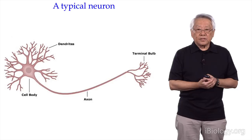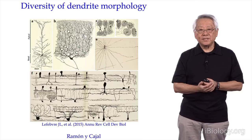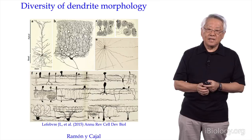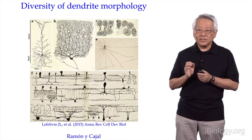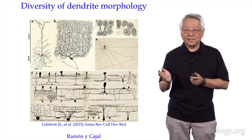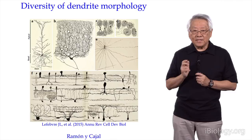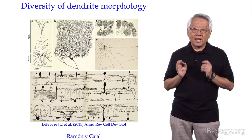Most neurons don't actually look like this generic neuron. In fact, the dendrite morphology of the neuron is extremely diverse, as illustrated by the drawings of Ramon y Cajal. Cajal was the founder of modern neuroscience — a great scientist but also a remarkable artist. He made thousands of exquisite drawings by visualizing neurons with Golgi's stain. From these drawings, you can see that dendrite morphology is very diverse and yet is neuronal type-specific. It's important to understand how each neuron develops its neuronal type-specific dendrite morphology.